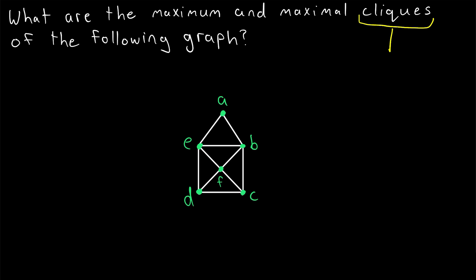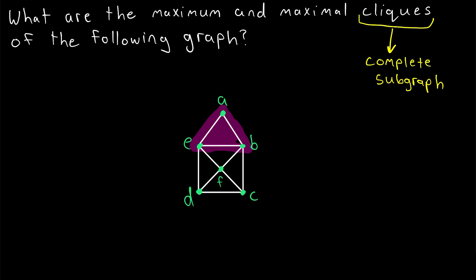Let's do a super quick recap. Remember that a clique of a graph G is a complete subgraph of G. We'll also often use the term clique to refer to the vertex set of a complete subgraph instead of the subgraph itself. For example, we might say that the vertices A, E, B and their adjoining edges make up a clique of this graph, or we might just say the vertices A, E, and B are a clique of the graph.